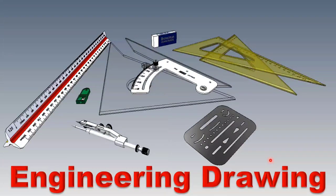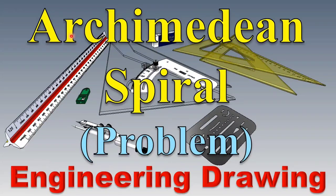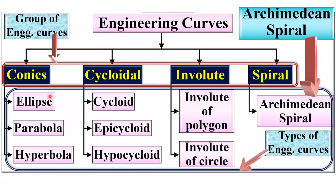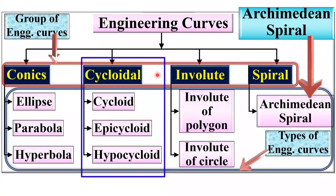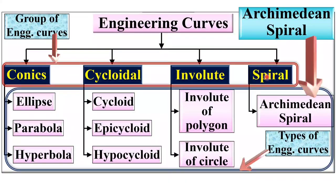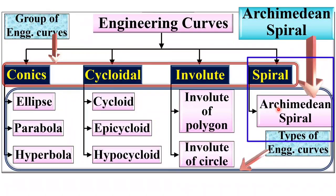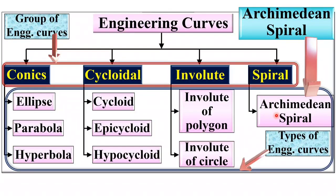Welcome to my engineering drawing playlist. Today we will discuss the Archimedian spiral. In the last video we saw one problem, and now it's the second problem. In the earlier video we discussed different engineering curves from the conics group, the cycloidal group, the involute group, and also from the spiral group. Now it's time to discuss one more problem based on Archimedian spiral.